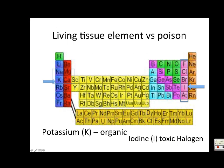If you look at the periodic table, here are the halogens. These are all used in medicines and they're very strong medicines - it's a poison, a toxin.